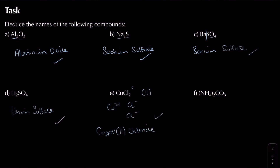Final example: there's ammonium as an ion - NH4+ - and the carbonate ion, CO3 2 minus. The positive ion is ammonium, the negative ion is carbonate. So the compound is called ammonium carbonate.